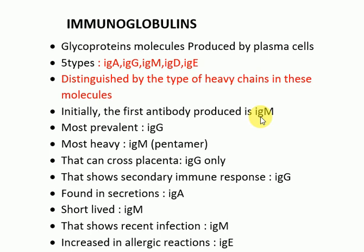Initially, the first antibody produced is IgM, and later on others are produced. For MCQs and your exams: the most prevalent immunoglobulin is IgG, and the most heavy one is IgM, which is a pentamer.